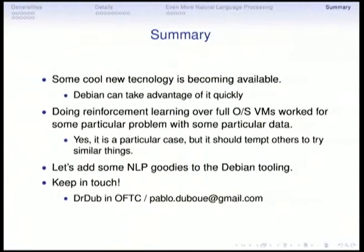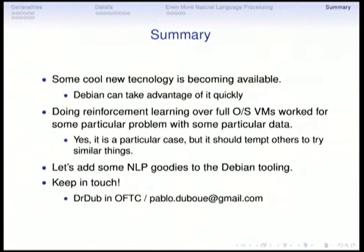To conclude: some cool new technology is becoming available and in Debian we can take advantage if it's useful for us. When I saw this work, I was really impressed that they could make this virtual machine stuff work. If you want to take something out of this talk, it's the fact that this type of technology actually works for somebody. I hope we can add some natural language processing goodies to the Debian tooling. Let's keep in touch — I'm Pablo, reach me at Gmail. Thank you.